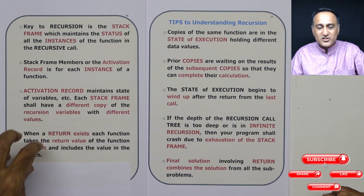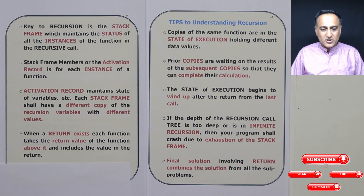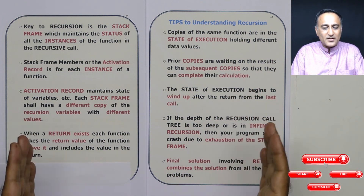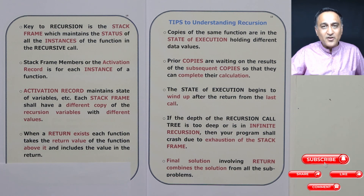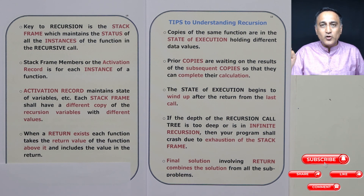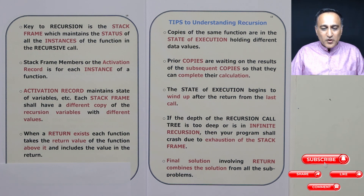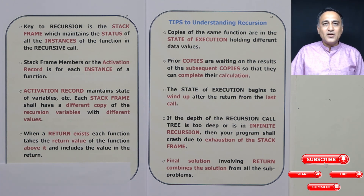This way we are able to combine the solutions and find the answer to the problem. To summarize the key tip: think that there are many copies of the same function executing — these are known as instances of the function. Each instance has an activation record with different values of local variables and parameters. When returning, you are combining the solution from each return, merging it, and giving a single answer at the end. I hope this clarifies your understanding of recursion.